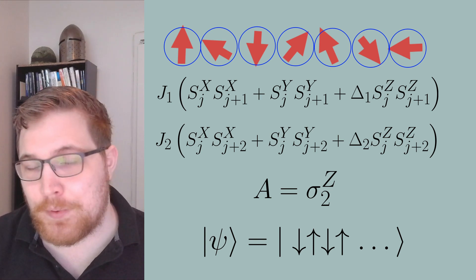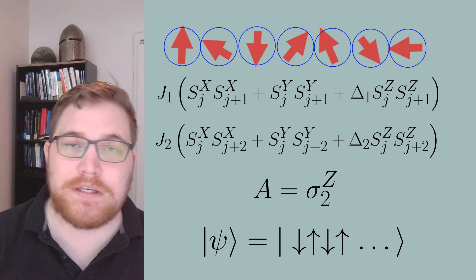So in the simulation I'm about to show you, the Hamiltonian has 22 spins.